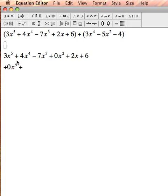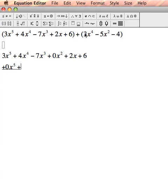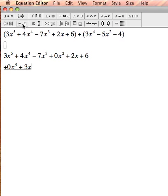0x to the fifth power plus I see a 3x to the fourth power. So I'm going to write that here. 3x to the fourth power. The next thing I see is I don't see an x to the third power. So I'm going to add 0x to the third power.